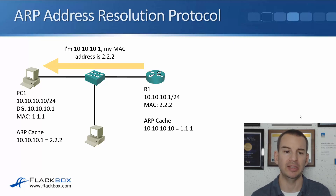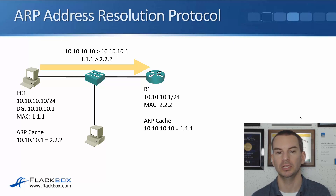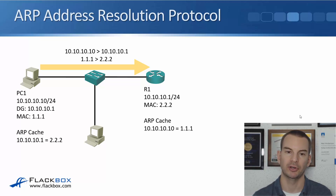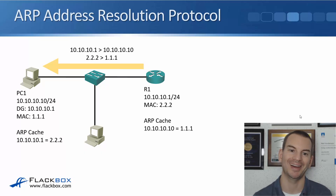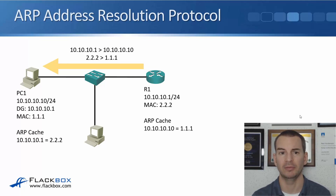PC1 then updates its ARP cache to say that 10.10.10.1 is available at 2.2.2. R1 also learns that PC1 at 10.10.10.10 is available with MAC address 1.1.1. When traffic flows from the PC to the router, it comes from source IP 10.10.10.10 to destination 10.10.10.1, source MAC 1.1.1 to destination MAC 2.2.2. Return traffic just flips that around. That's standard ARP operation.